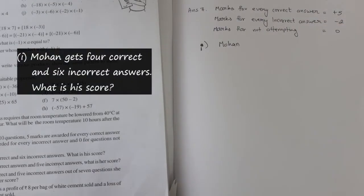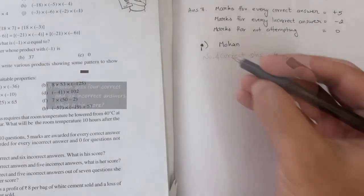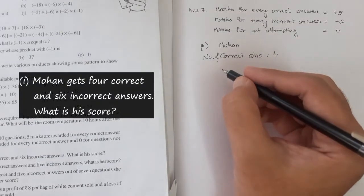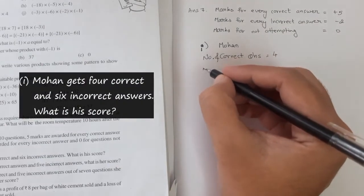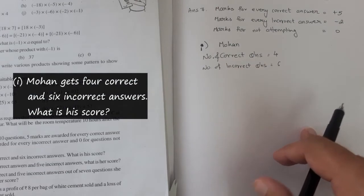So first part is Mohan gets 4 correct and 6 incorrect. So we have to find what is his total score.